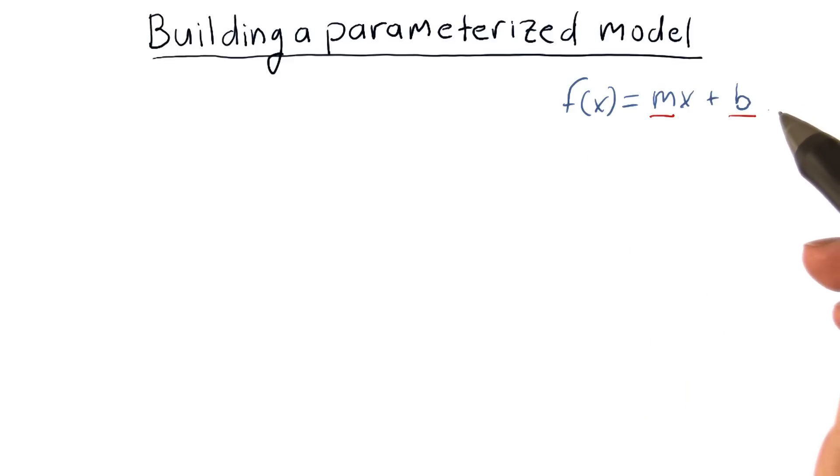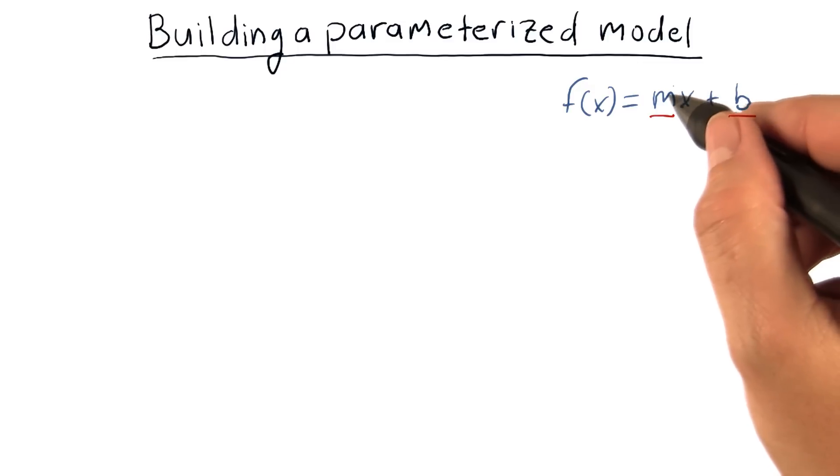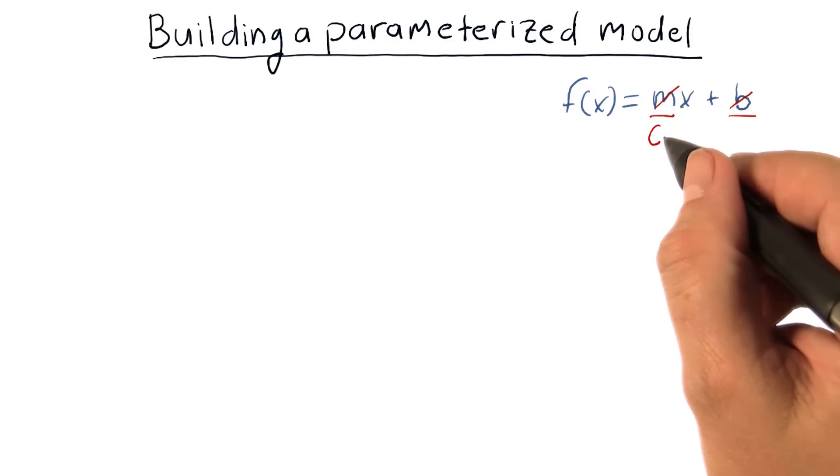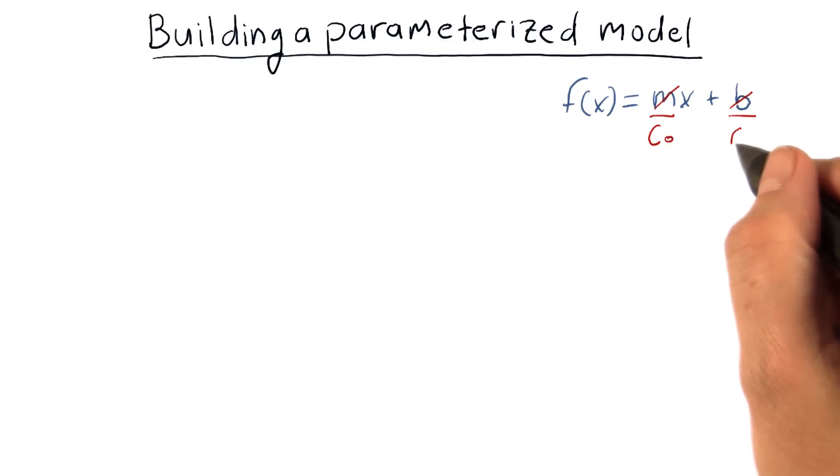In fact, as you're probably aware, this is the equation of a line. So m and b are the parameters of that line. Now for convenience in our code, instead of using m and b, I'm going to use c0 and c1 just to be consistent.